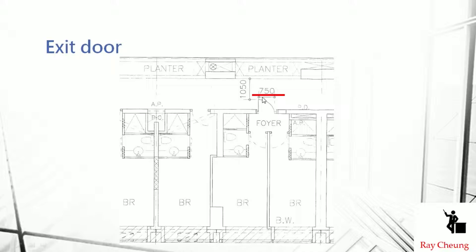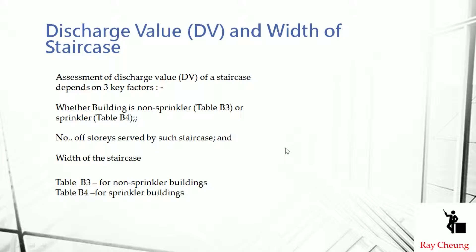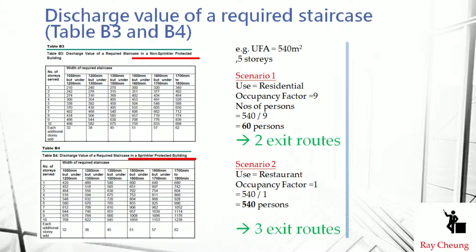After confirming the number of exits, you need to check whether the staircase is adequate to allow people to exit — this is called the discharge value. In Hong Kong, there are two tables: one for buildings without a sprinkler system (Table B3) and one for buildings with a sprinkler system inside the exit staircase (Table B4). If your building has sprinklers in the staircase, use Table B4; otherwise use Table B3.